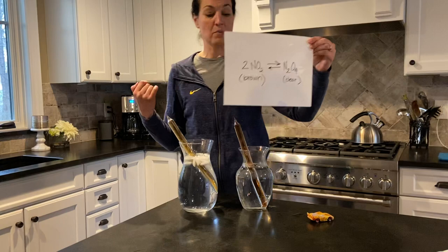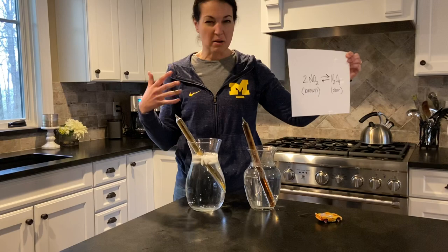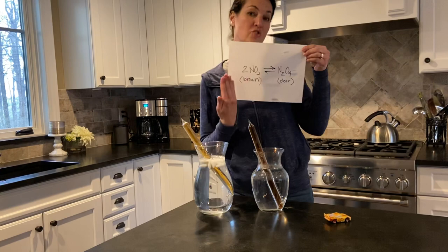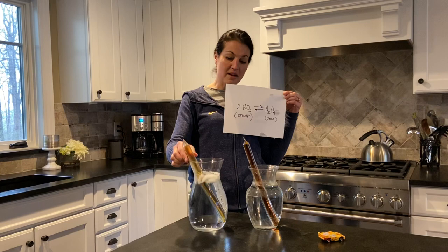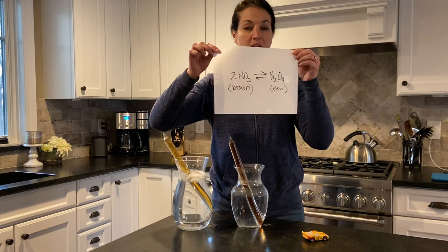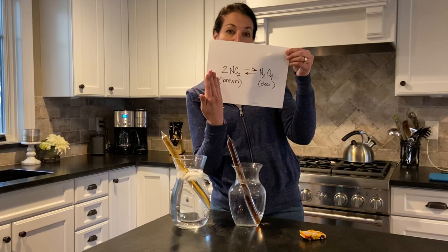NO₂ is actually smog, which is why on ozone action days or in the summer it seems more smoggy and polluted — as the air warms up, the equilibrium shifts more towards the brown color. What's inside this tube right now is actually smog. You're going to have to answer some questions at the end of the week about these reactions. Remember: when it's warm, this reaction shifts towards the brown; when it's cold, it shifts towards the clear.